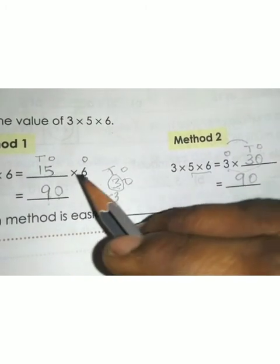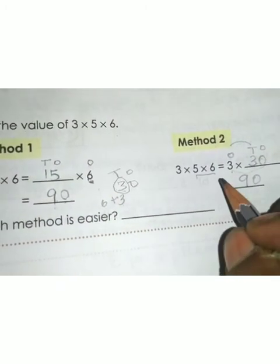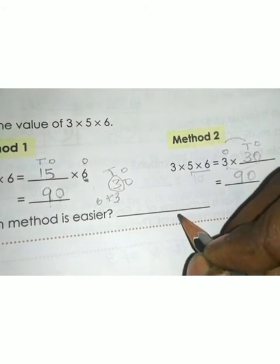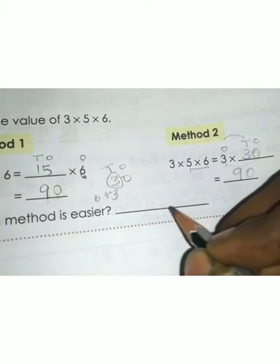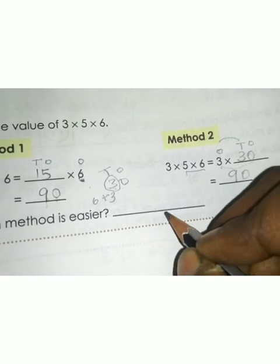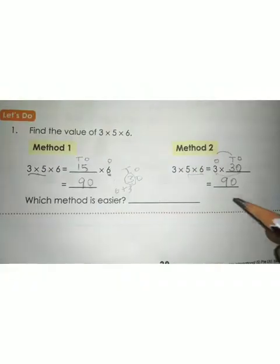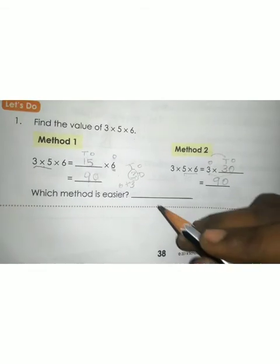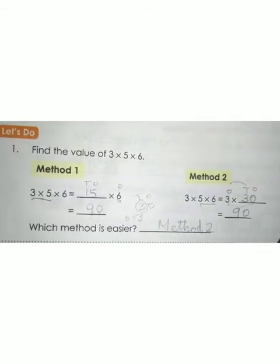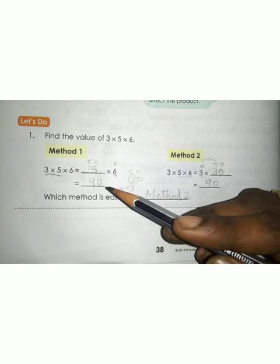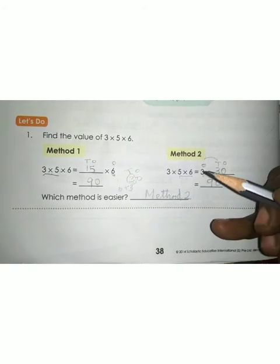Which method is easier for you — this one or this one? You have to write the answer: method 1 or method 2. For me, method 2 is easier. You can write whichever method you find easier — it's your choice.